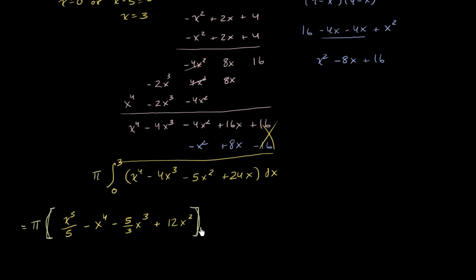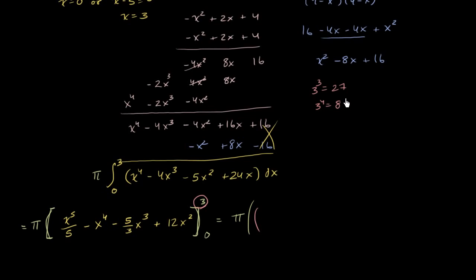We're going to evaluate that from 0 to 3. So this is going to be equal to pi times — let's evaluate all this at 3. We're going to get 3 to the fifth power. 3 to the third is 27, 3 to the fourth is 81, 3 to the fifth is 243. So it's going to be 243 over 5, minus — well, 3 to the fourth is 81 — minus 81.